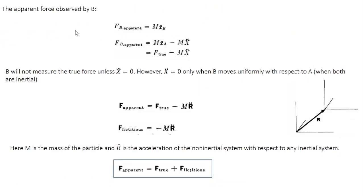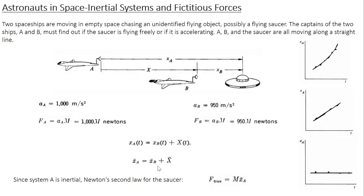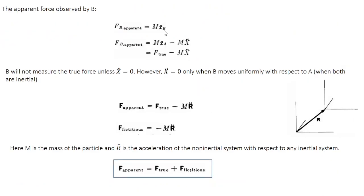On the other hand, if frame B is the accelerated or non-inertial frame, then the force measured from spaceship B, M·X_B double dot, is known as the apparent force. You know the relation between X_A double dot and X_B double dot. Substituting for X_B double dot, you get M·X_A double dot minus M·X double dot. The first term is the true force, so the apparent force equals F_true minus M·X double dot.